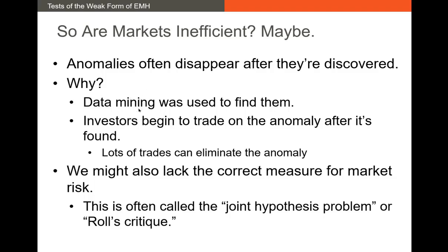Well, it could have been the case that data mining was used to find these anomalies. Maybe researchers were trying to find something that would predict stock returns because their career objectives were based on publishing, found something that offered a positive alpha, and published it. And then as soon as it became known and people started using different data sets, the anomaly disappeared — basically it was an artifact of the data. Another explanation is that as soon as investors became aware of these anomalies and they became public knowledge, investors started trading on them. If everyone knows that small stocks outperform big stocks, everyone starts buying small stocks, boosting the price up and driving future returns down. As soon as people are aware of an anomaly, they start trading on it and the anomaly disappears.